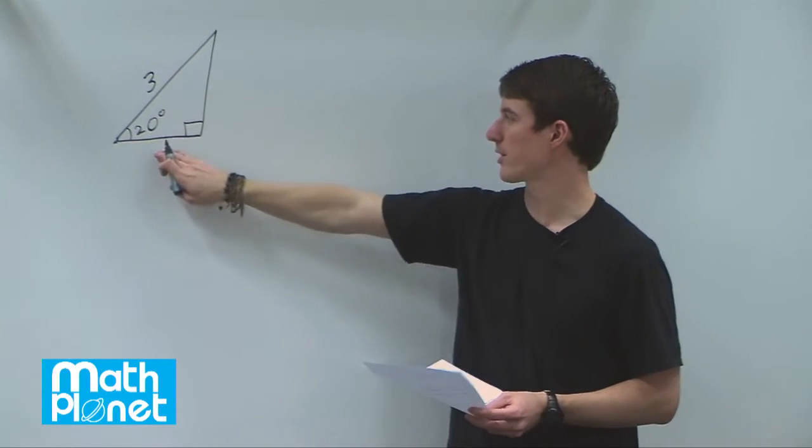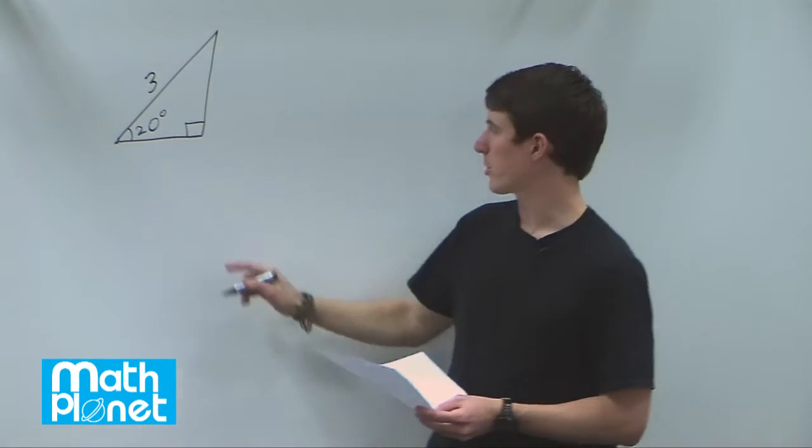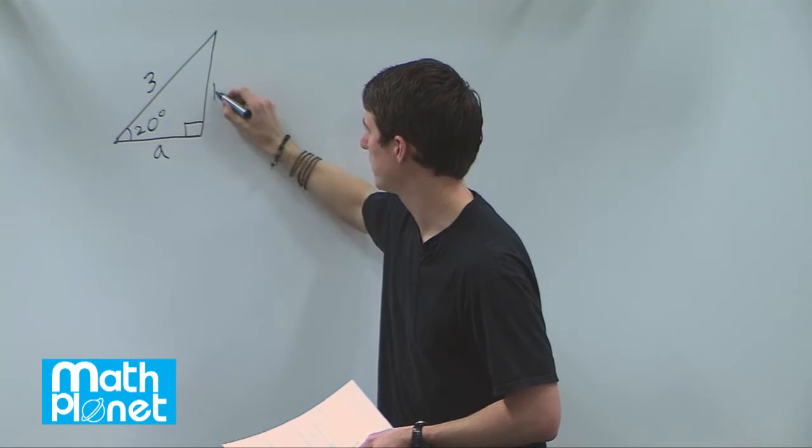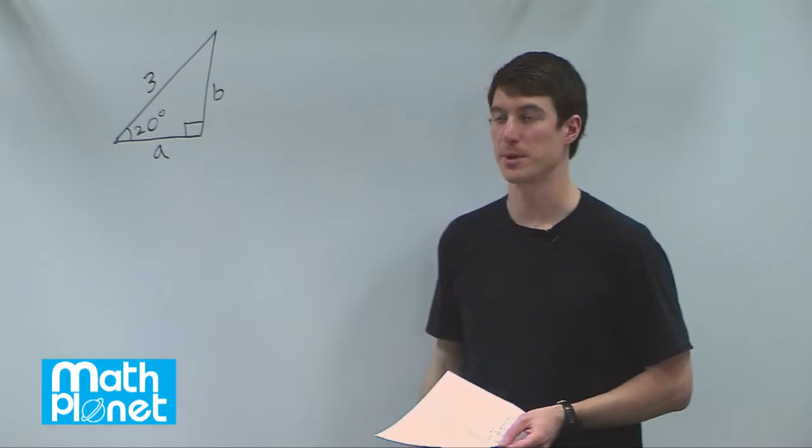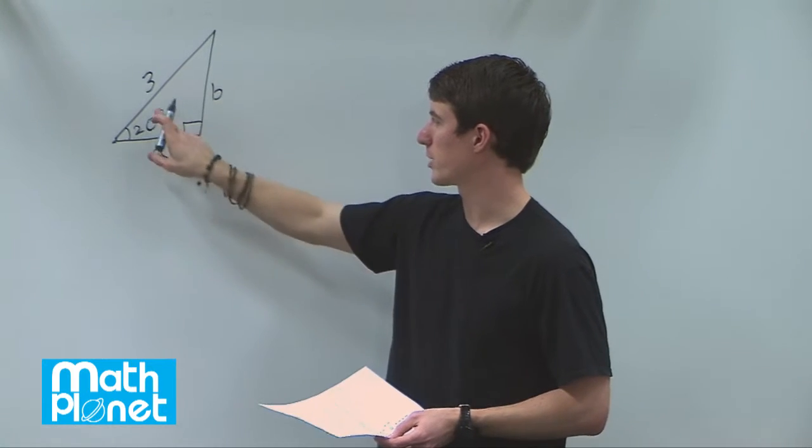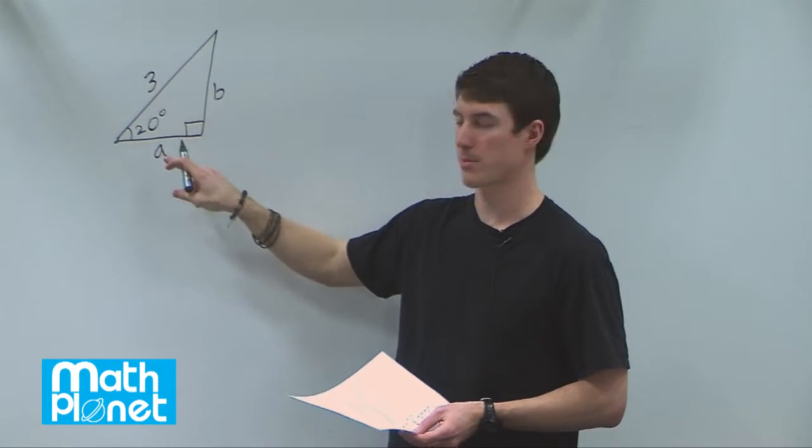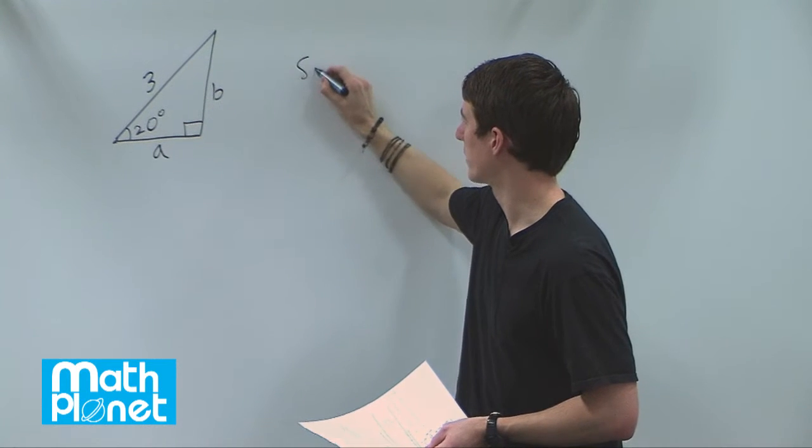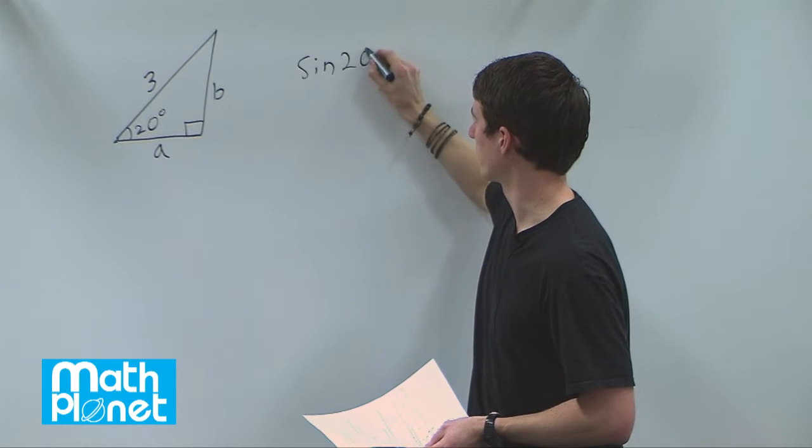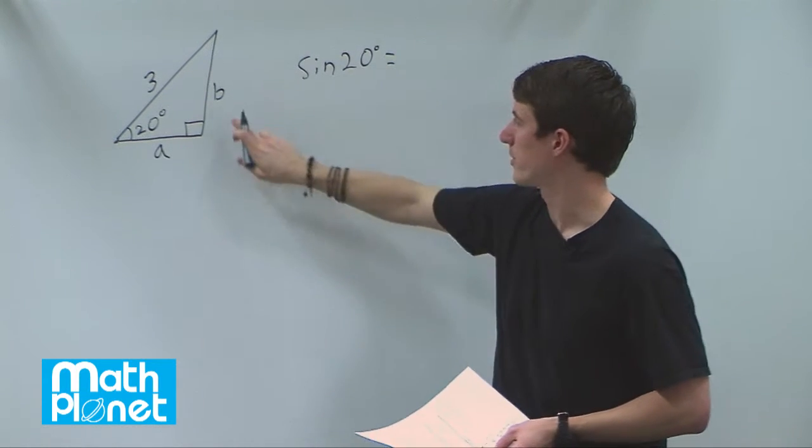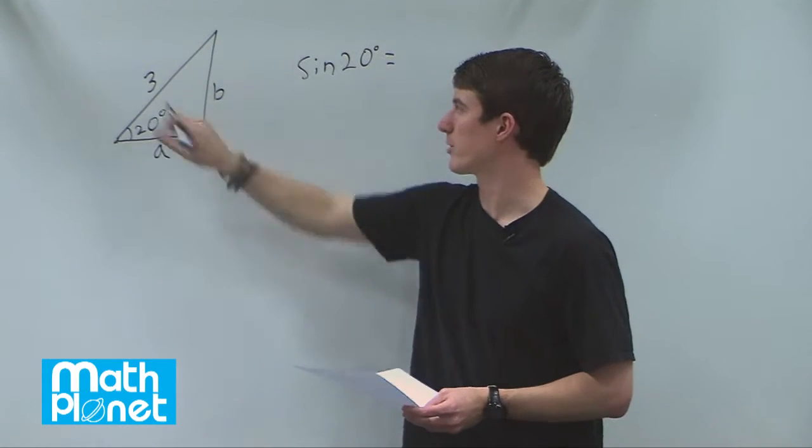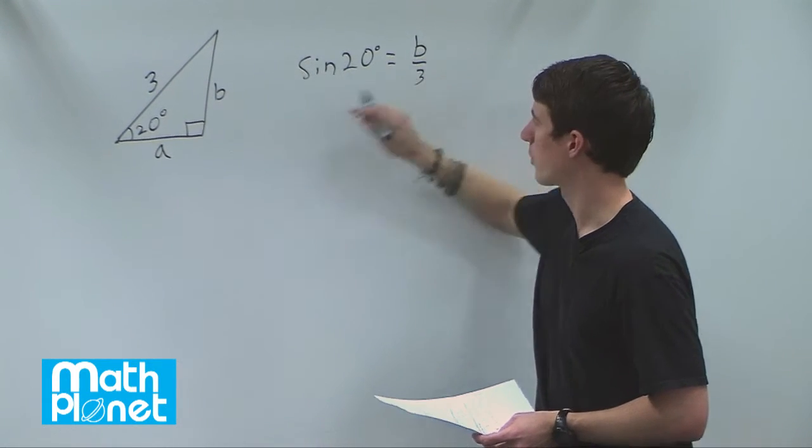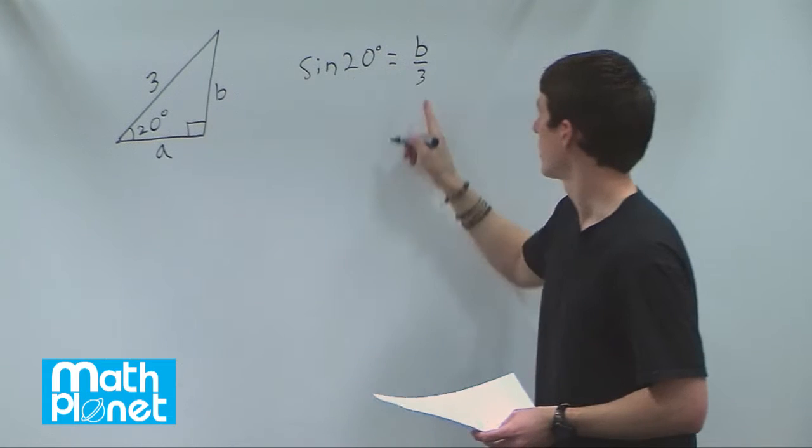So we want to find this length and this length. So let's call this, using Pythagoras' notation, a and b, and solve for a and b. So doing that, we're going to use cosine and sine trigonometric functions of this 20 degrees. So sine of 20 degrees gives us this over this, so b over 3. So opposite over hypotenuse. So to solve for b,